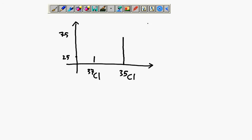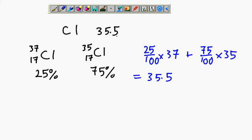In the periodic table, you might notice that Cl has a relative atomic mass of 35.5. If you have chlorine 37 with 25% and chlorine 35 with 75%, you can do the calculation: 25 over 100 times 37 plus 75 over 100 times 35, and you will get 35.5.